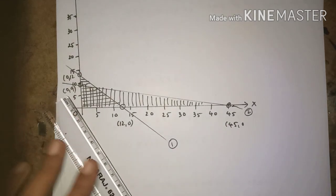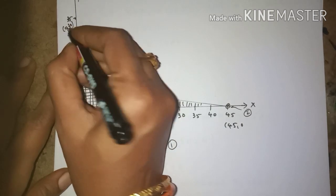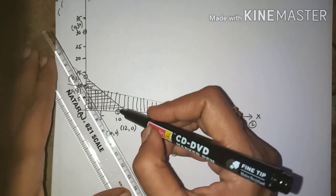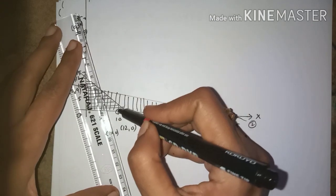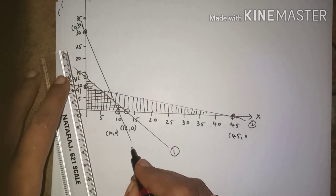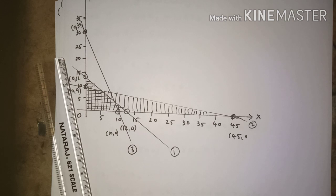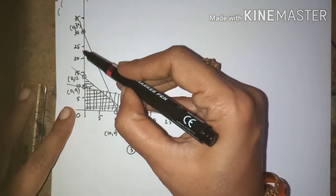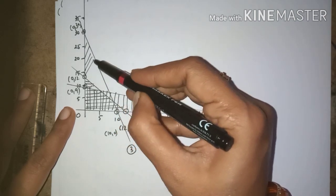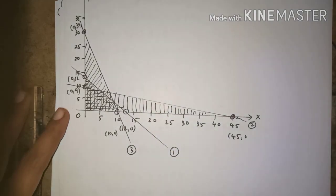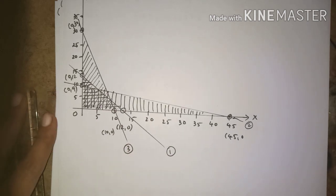The third constraint gives points (0, 30) and (10, 0). Join these two points. This constraint also has less than or equal to symbol, so the shaded region is below the line. I will draw slanting lines for this region. Wherever you get the netted area — where all three shadings overlap — that is the feasible region.